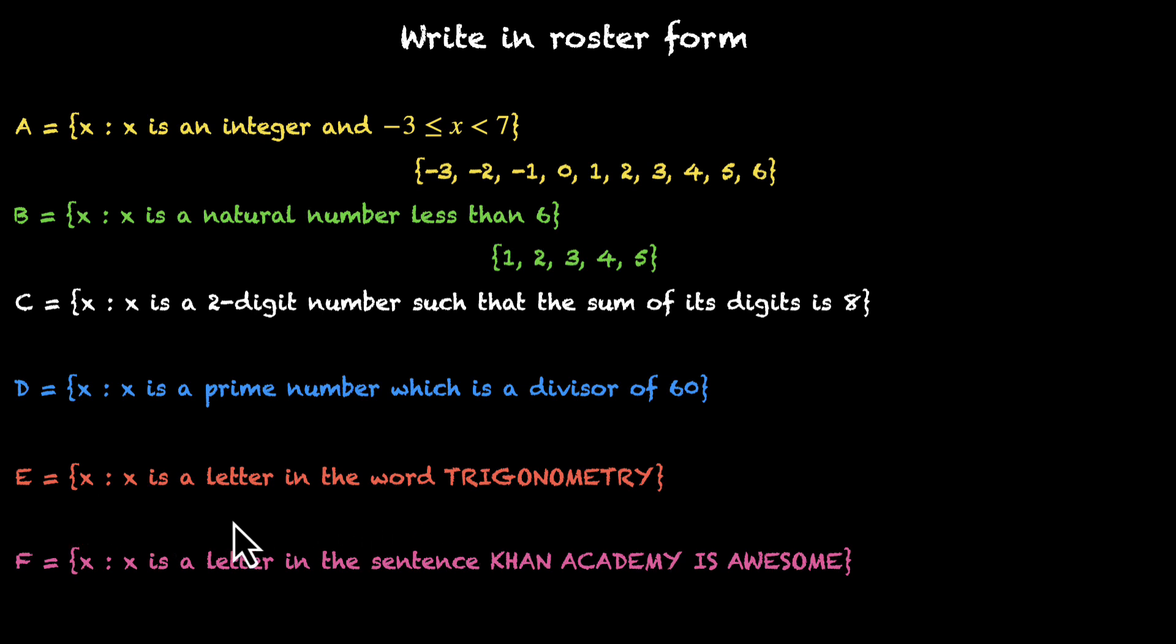Okay. We have X is the letter in the word trigonometry. Okay. I can do this. We have T, R, I, G, O, N, O again, and then M, E, T again, R again, and then Y. So we take all of these letters and we avoid repetition.